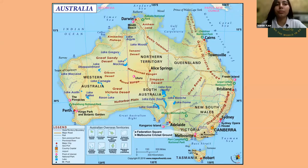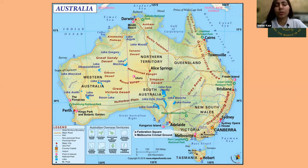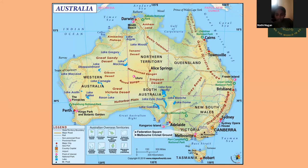Now we will look at the map of Australia. Australia has different regions and provinces. Does anyone know the capital of Australia? Canberra? — okay, Sreesia.